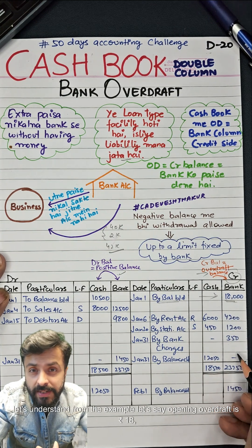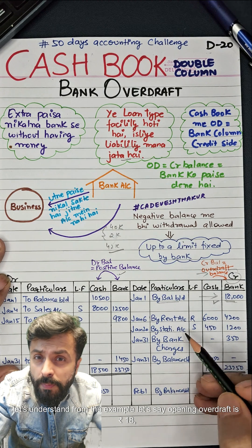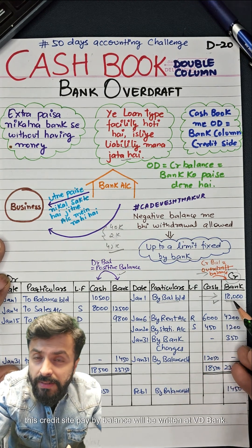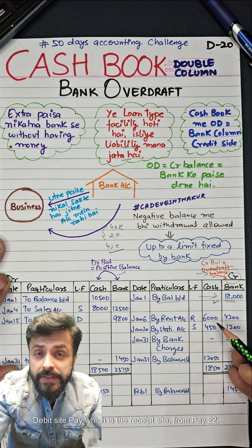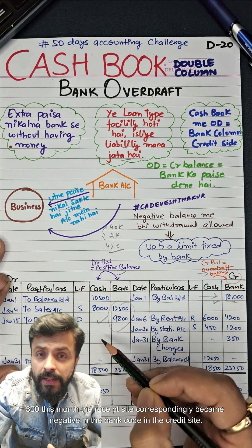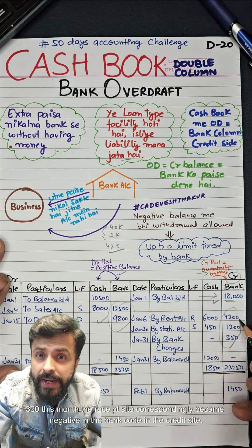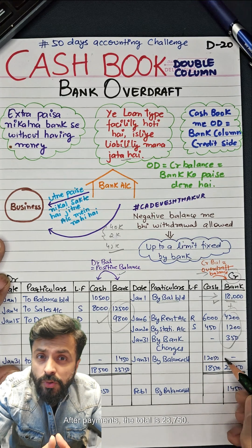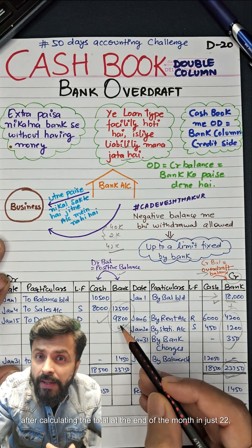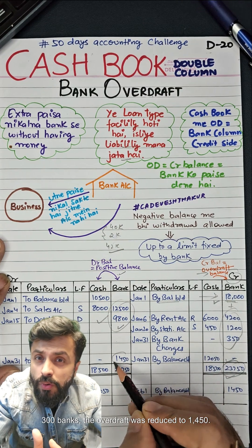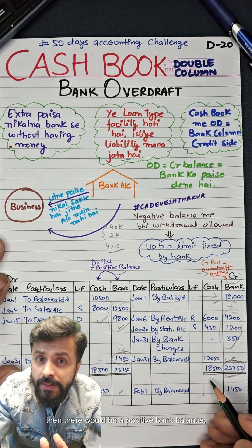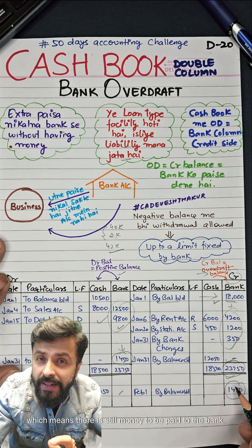Let's understand from an example. Say the opening overdraft is RS18,000. In the cash book, this credit side 'By Balance' will be written as BD bank. On the debit side, which is the receipt side, payments of RS20,300 were received this month, while on the credit side after payments, the total came to RS23,750. Against that, after calculating the total at the end of the month, the receipts side totalled RS22,300, so the overdraft was reduced to RS1,450. If there was a debit balance, it would show a positive bank balance, whereas here there is a credit balance, which means there is still money to be paid to the bank.